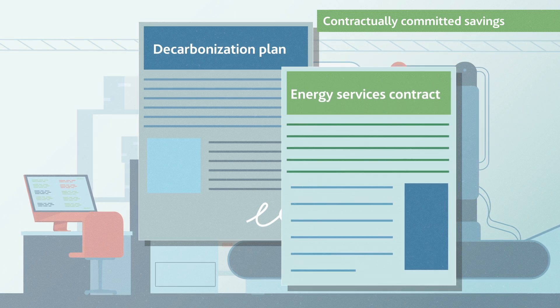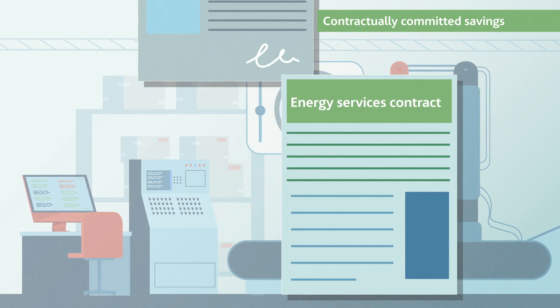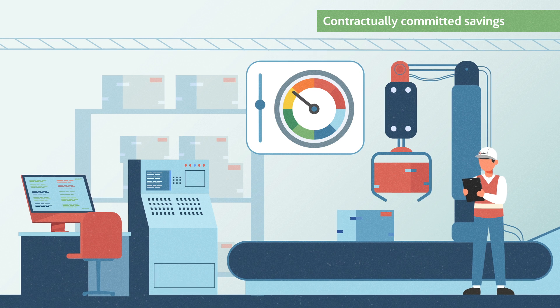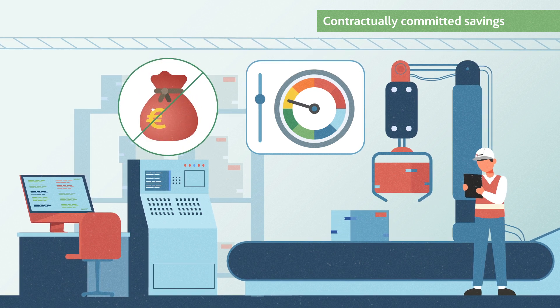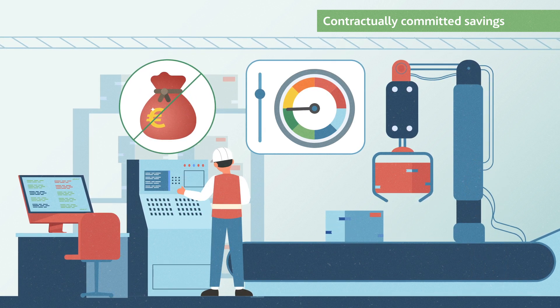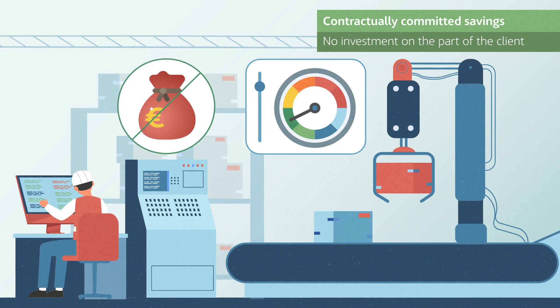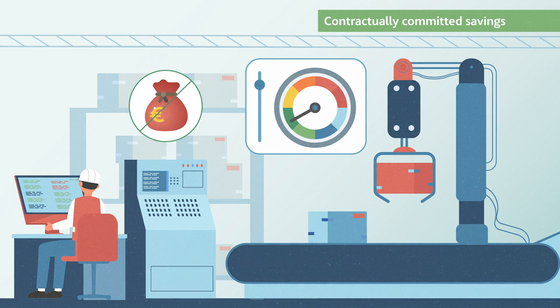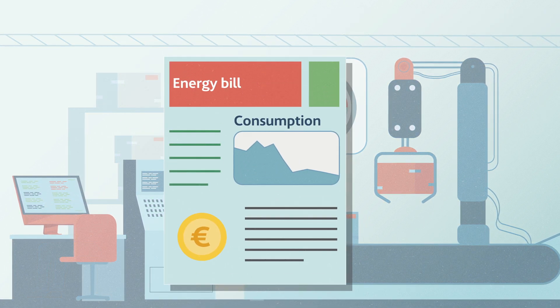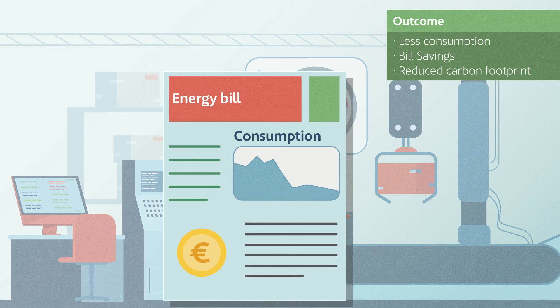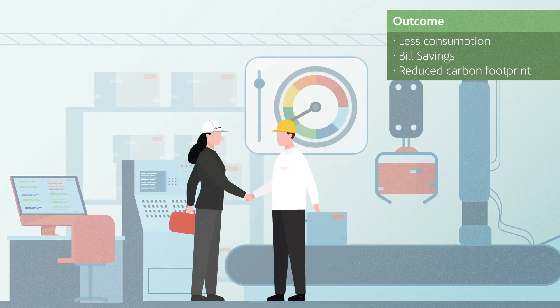In the plan, the ESCO commits itself by contract to achieve a predetermined saving to cover the investment needed. During the contract, the ESCO operates and maintains the equipment. In addition to reducing its consumption and bill, the customer reduces its carbon footprint, and the ESCO receives a portion of the money saved in payment for services rendered.